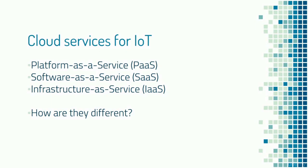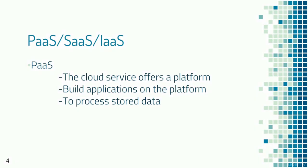There are different types of cloud services for the Internet of Things: Platform as a Service (PaaS), Software as a Service (SaaS), and Infrastructure as a Service (IaaS). In Platform as a Service, the cloud provider offers an application framework where you can write scripts or programs in different languages to process the data stored on the cloud. For example, you can write code to process accelerometer data and extract information about the positioning of the end device.